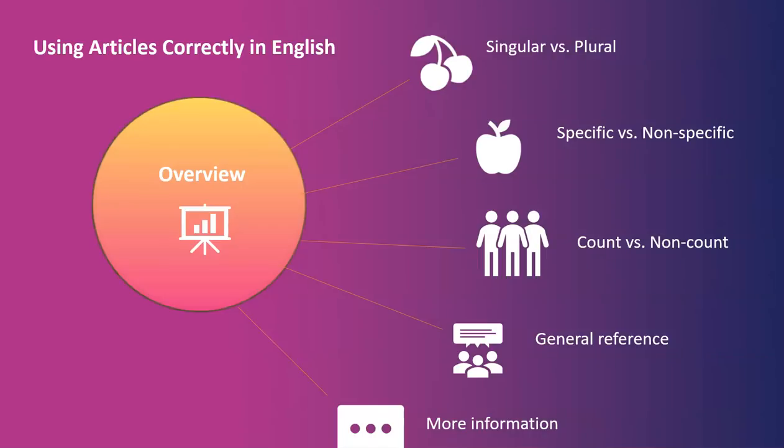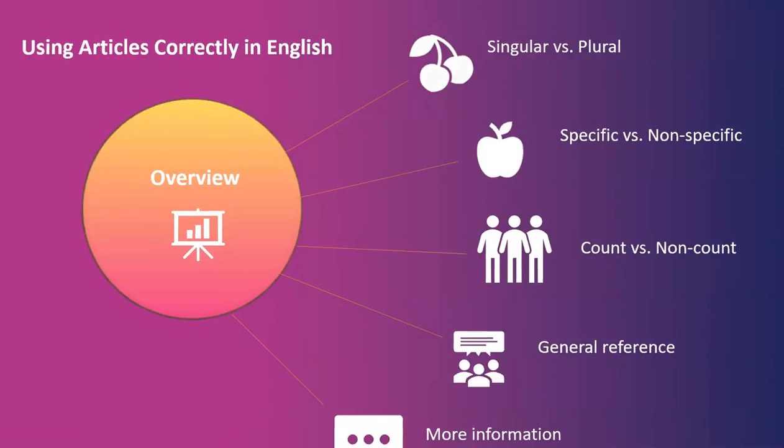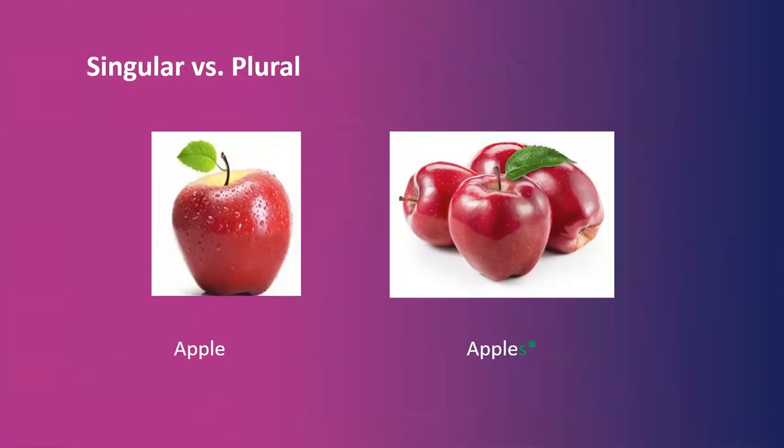First, we'll start with singular versus plural. As you probably know, count nouns can be divided into singular and plural. Singular means just one. Plural means more than one. Usually, we indicate the plural by adding an S to the noun, though not always.